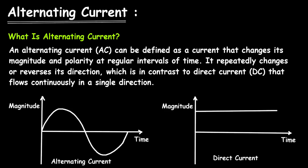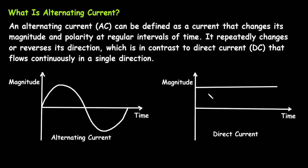On the left side we can see alternating current and on the right side this is direct current. In case of alternating current, its polarity and magnitude changes at regular intervals. On the y-axis is the magnitude and on the x-axis is time. The electrical charge goes from 0 to the maximum value, then back to 0, completing one positive cycle, then reverses to maximum in the opposite direction and back to 0, completing one full cycle. In case of DC, the magnitude is constant with respect to time.